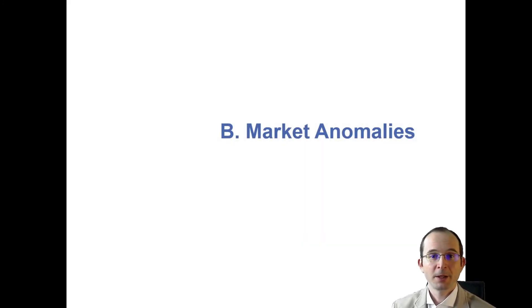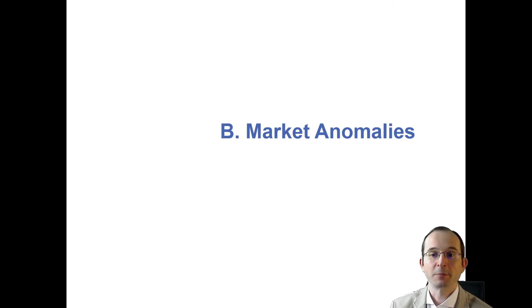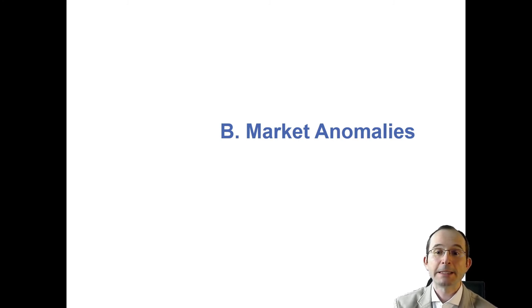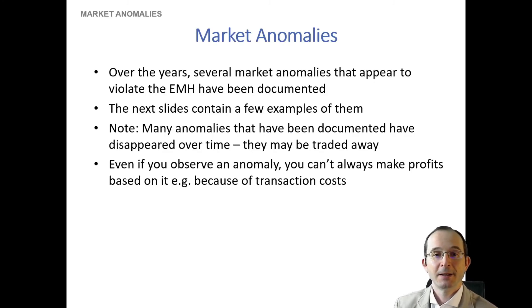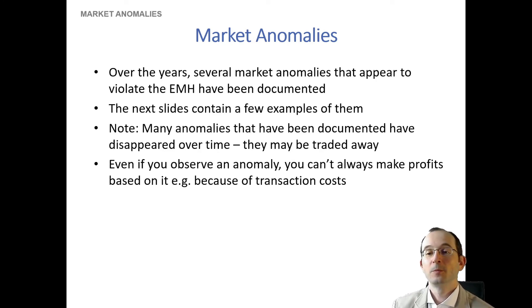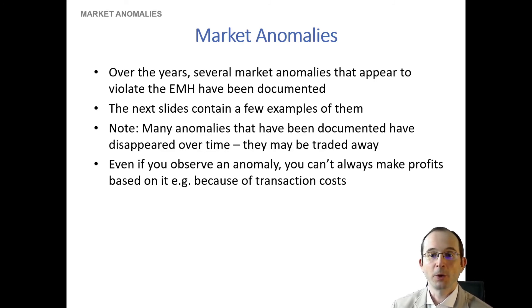Now let's talk about market anomalies — in other words, these sorts of persistent patterns of return predictability that may be considered violations of the efficient market hypothesis, in the sense that any sort of return predictability ultimately is. In the data uncovered both by academic researchers and by practitioners, there are actually quite a few patterns of seemingly predictable returns.